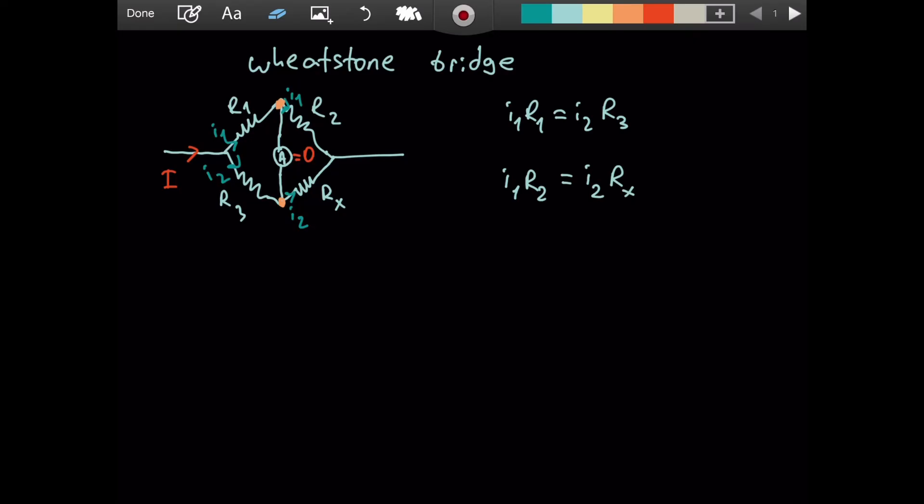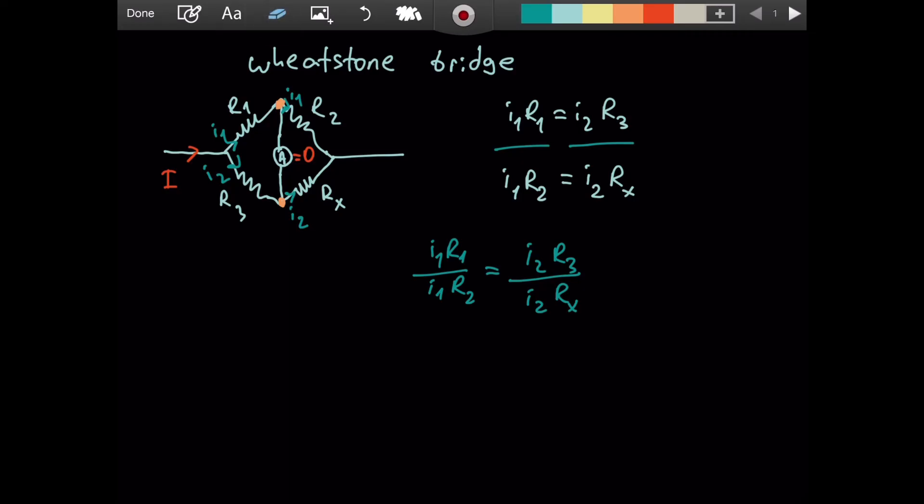If we were to divide, I want to basically divide I1 R1 by I1 R2. That will equal I2 R3 divided by I2 Rx. And so the current will be cancelled. That's very nice. We see then R1 Rx equals R2 R3.